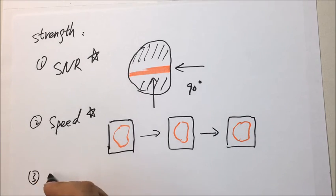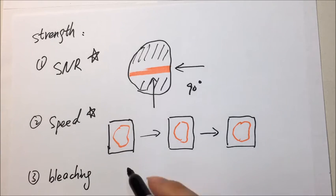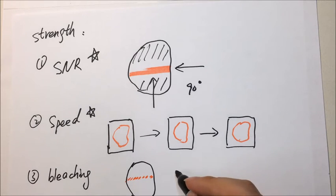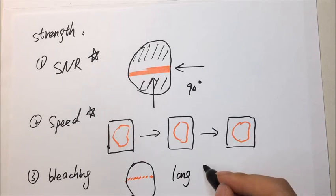Third, bleaching is low. It concentrates light only where excitation is needed, thus maximizing the efficiency of the illumination source. As a result, it reduces the phototoxic effects and bleaching. This means that they can be observed over a long time period than ever before.